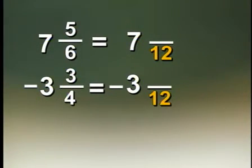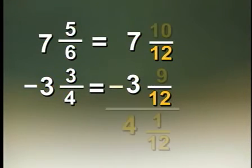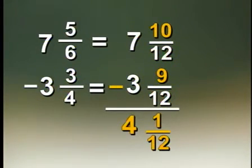In this case, we use 12, because both 4 and 6 divide 12. We get 10 12ths minus 9 12ths, which is 1 12th, and of course, 7 minus 3 is still 4. We get 4 and 1 12th, and by using the lowest common denominator, we did not have to reduce.